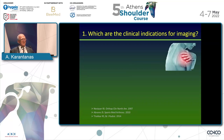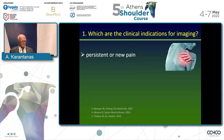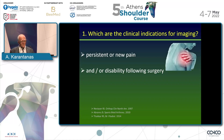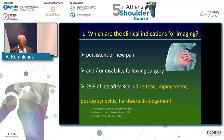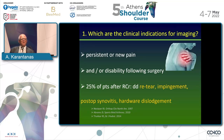Which are the main clinical indications for imaging? Persistent or new pain together with or without disability following surgery are the main indications. According to literature data, 25% of patients after rotator cuff repair present with pain or disability, and the major differential diagnosis includes retear, impingement, post-operative synovitis, and hardware dislodgement.